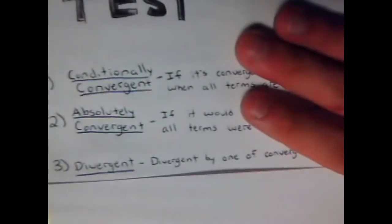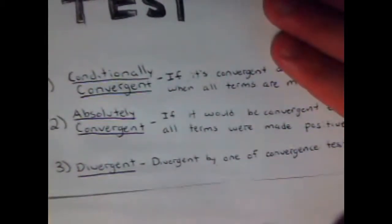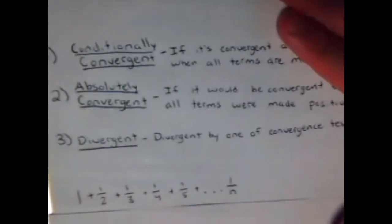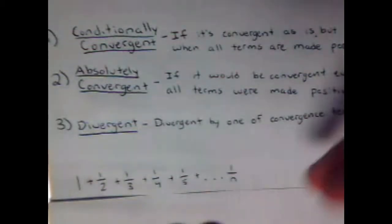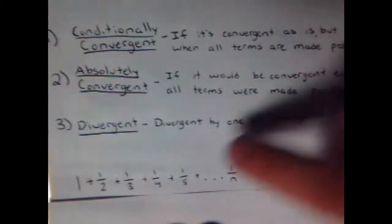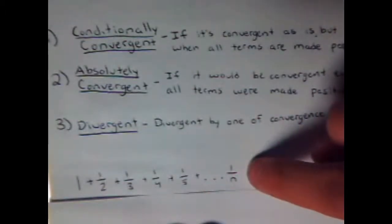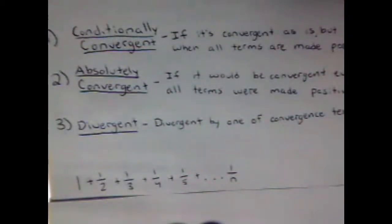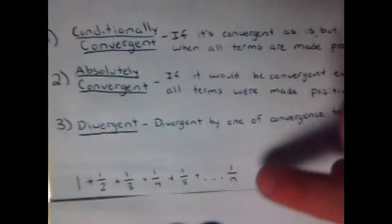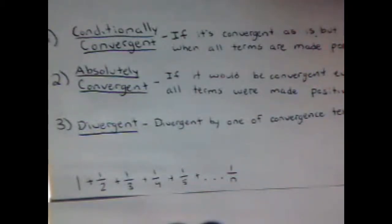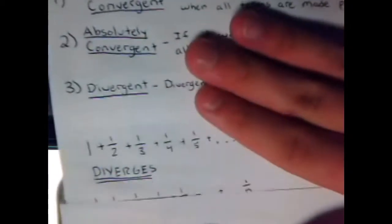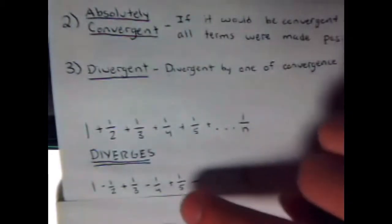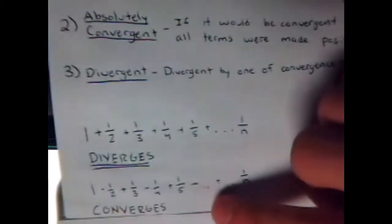A basic example — I'm not going to work through it fully, but just to explain the idea: if we look at the Harmonic Series, we all know it diverges, because it diverges technically to infinity. Although it is decreasing, it decreases too slowly, and the Harmonic Series will always diverge. But if we make it alternating, then it would converge.